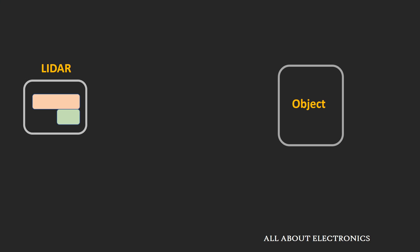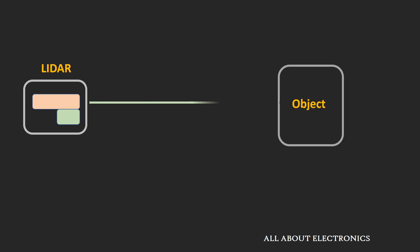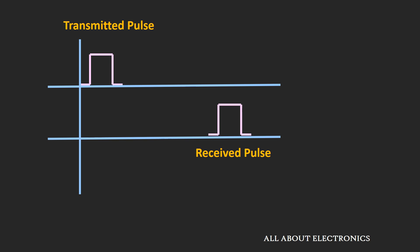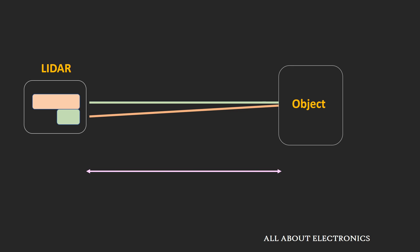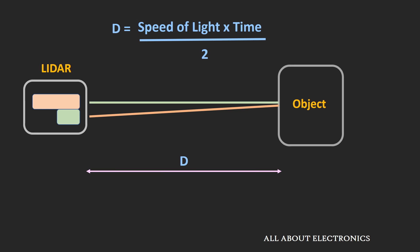In any LIDAR system, the laser and the detector are the two main components. Most LIDAR systems work on the principle of time of flight. In this principle, the laser in pulse form is targeted on the object, and the reflection or scattering from the object is measured by the detector. At the detector side, the timing between the transmitted pulse and the received pulse is measured. If we call the distance between the LIDAR system and the object D, then knowing the timing difference between the transmitted and received pulse, we can calculate that distance using simple mathematics.